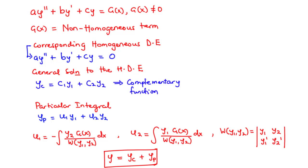The Wronskian of y₁ and y₂ is given by the determinant of a 2×2 matrix, where the first row contains y₁ and y₂, and the second row contains their first derivatives y₁′ and y₂′. The particular solution is then yp = u₁·y₁ + u₂·y₂. To find the general solution to the given differential equation, you add the two solutions — yc and yp — to get the general solution to the non-homogeneous equation.